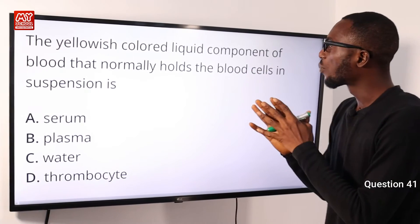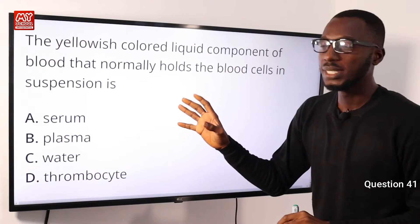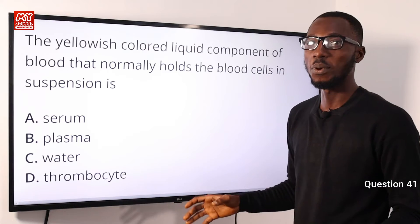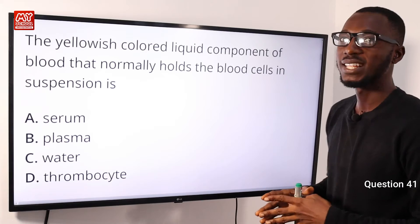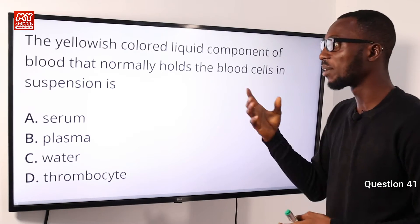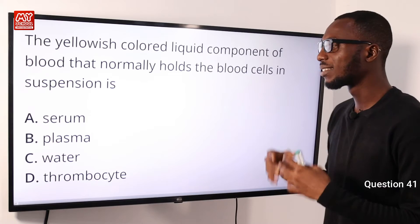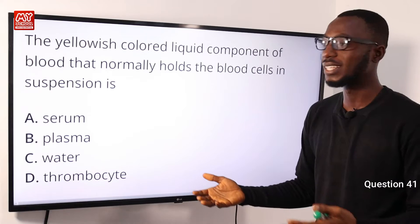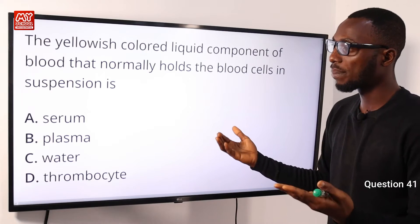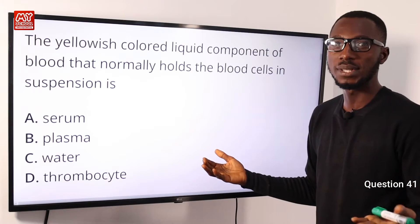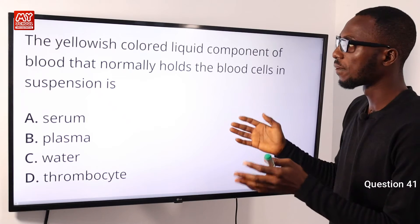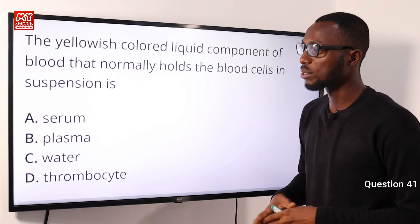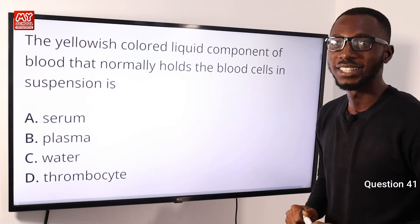The yellowish colored liquid component of blood that normally holds the blood cells in suspension is what? We know that the plasma is a pale yellow liquid portion of the blood and it's majorly made up of water. We can roughly estimate that the plasma makes up about 55% of the blood. So scanning through our options, option B, plasma is the correct option.